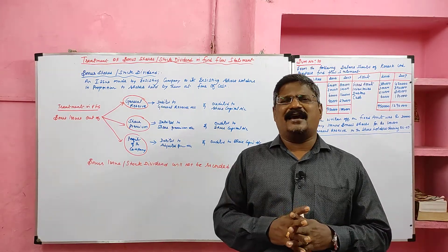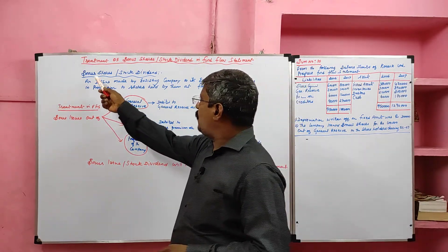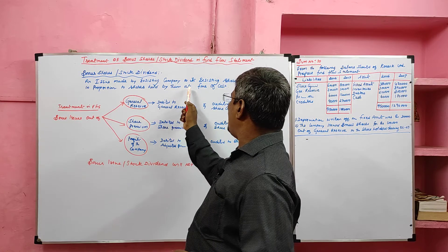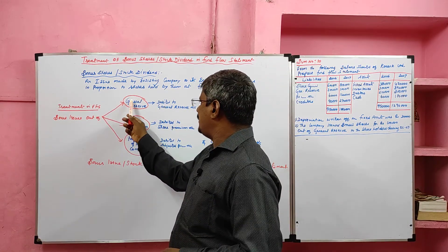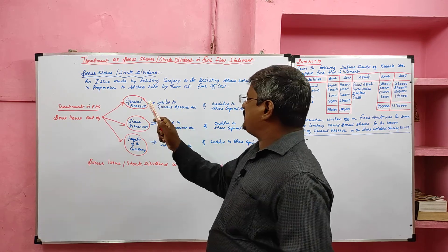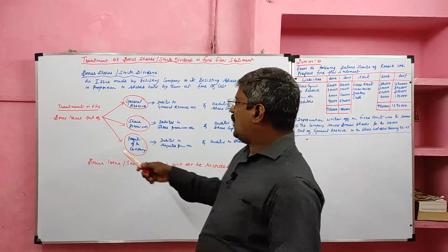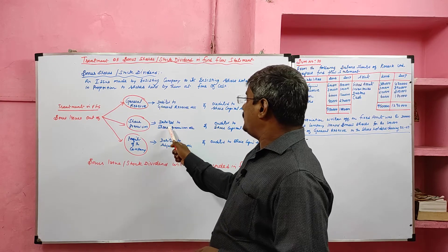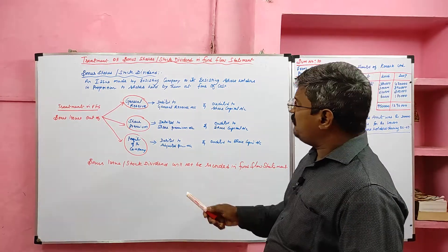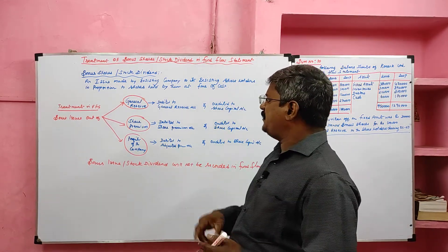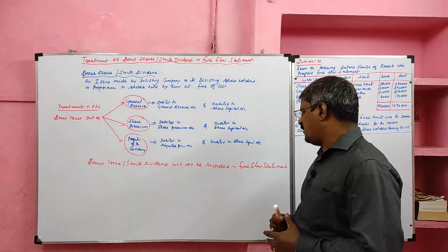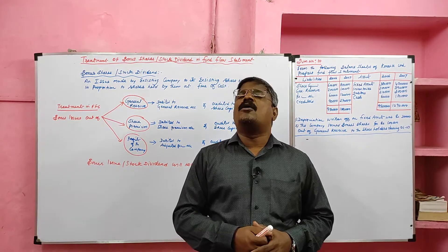The bonus issue will not be recorded in the fund flow statement — there is no inflow of cash. Bonus shares, also known as stock dividend, are an issue made by an existing company to its existing shareholders in proportion to shares held, at free of cost. Whether the bonus issue is out of general reserve, security premium, or profits of the company, the same accounting entries apply across the respective ledger accounts. Stock dividend will not be recorded in the fund flow statement. Let me now look at one problem in relation to bonus issue in fund flow statement.